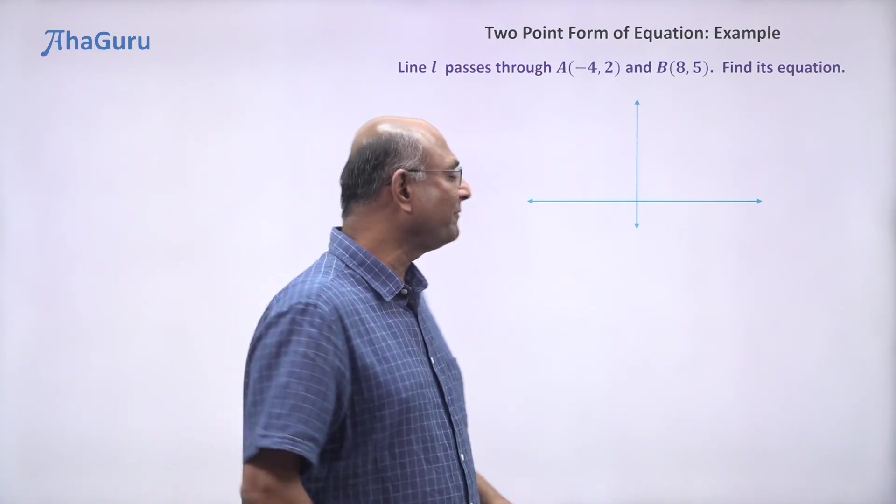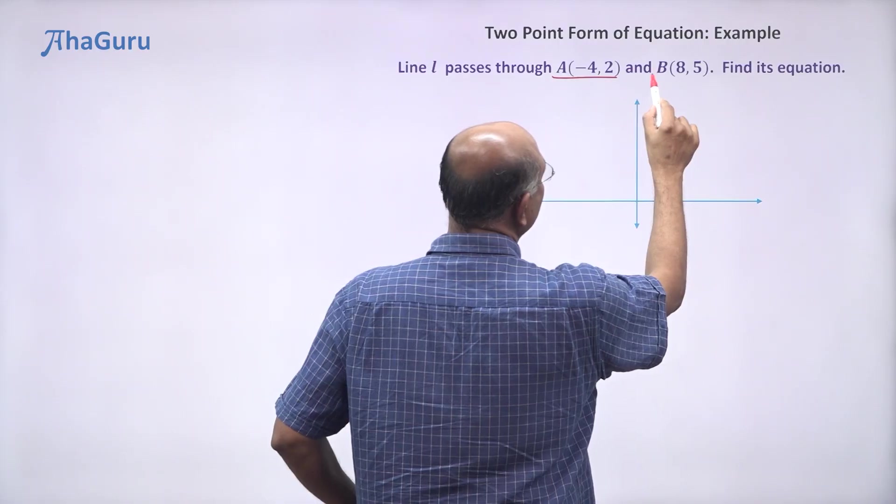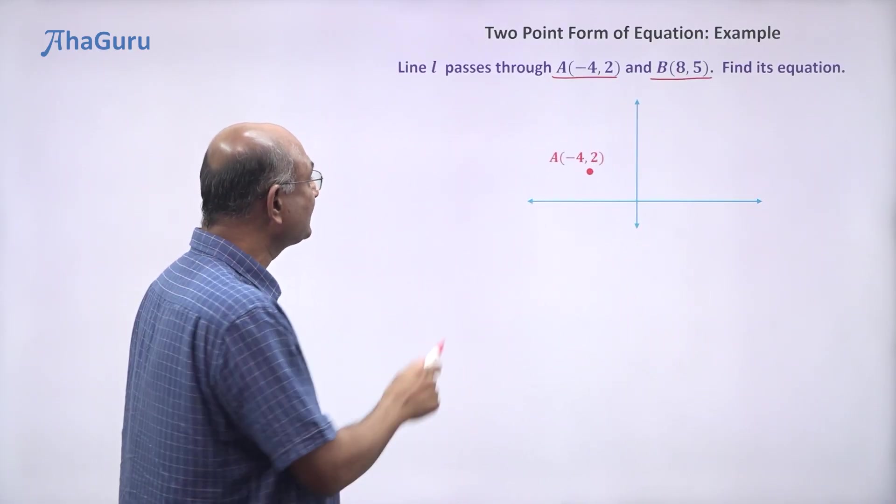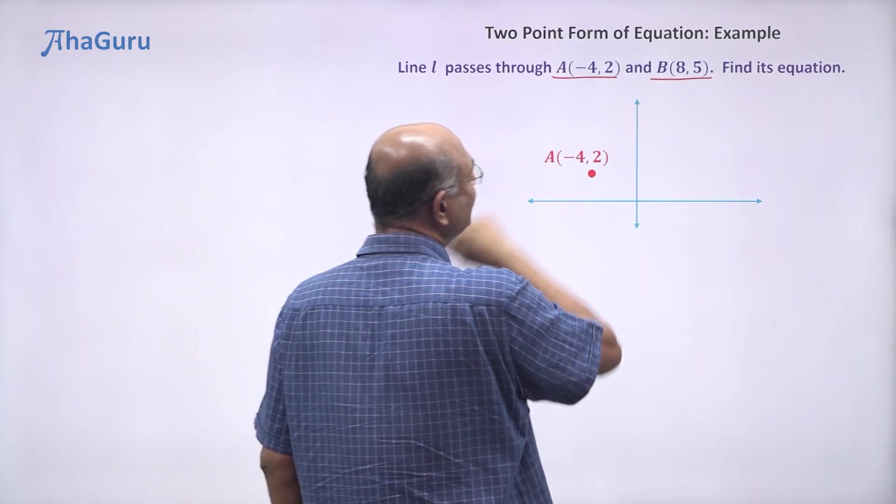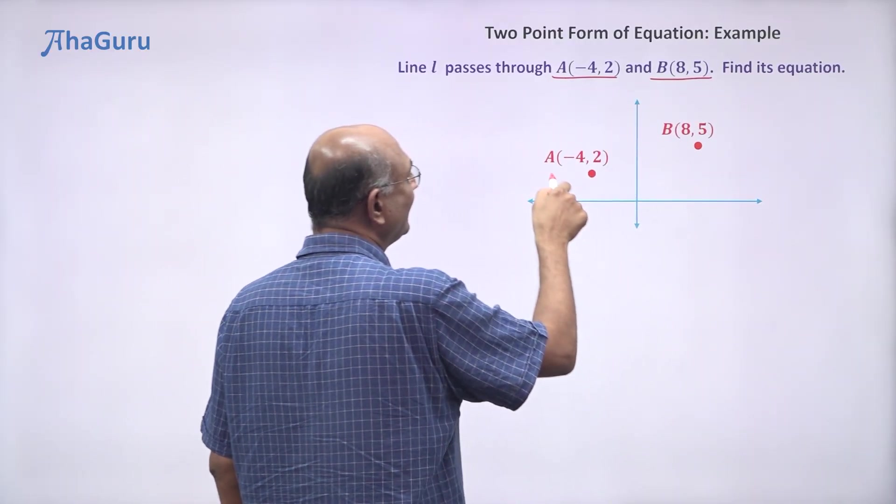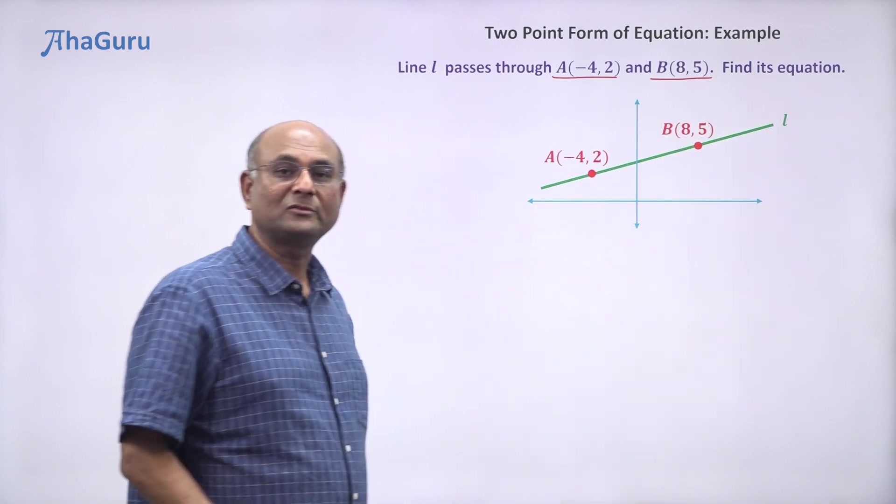In this example we have been told that line l passes through A as well as B. A has coordinates (-4, 2), it's going to be here. B has coordinates (8, 5), it's going to be there. And if the line has to pass through both, the line has to look like this. So that is line l.